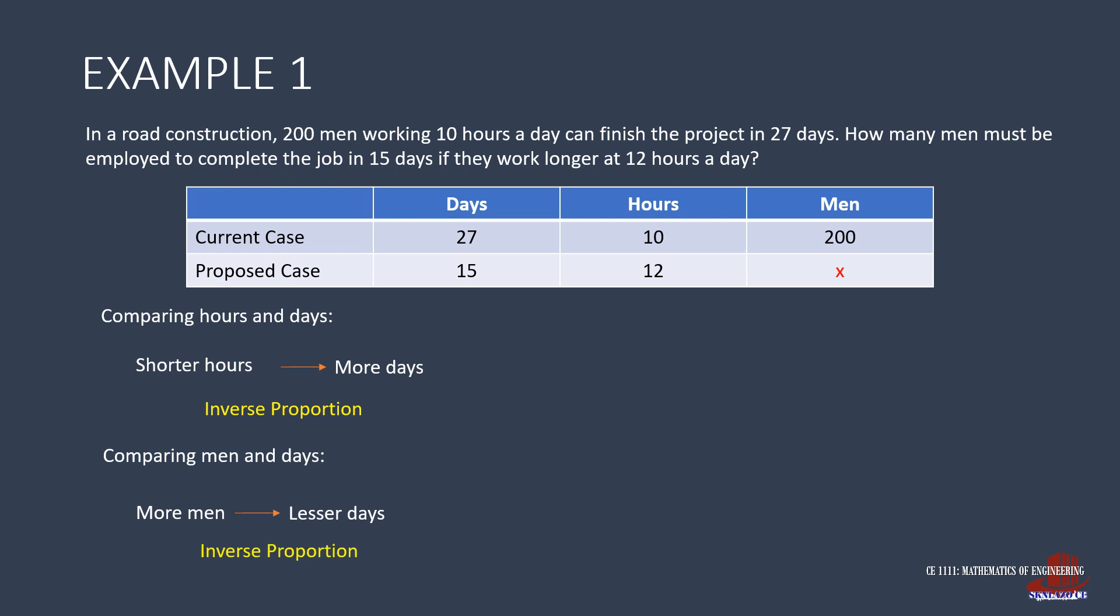With two inverse relationships, the problem asks for case 4 equation, where we take the product of A, B, and C, then equate it with the product of D, E, and F. Plug in the given values and get 27 times 10 with 200 as equal to 15 times 12x. So x is solved as 300 men.